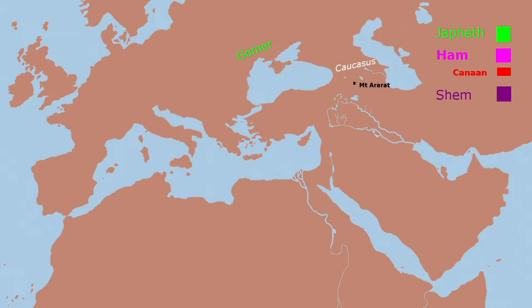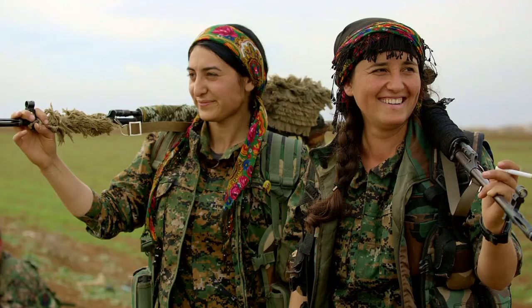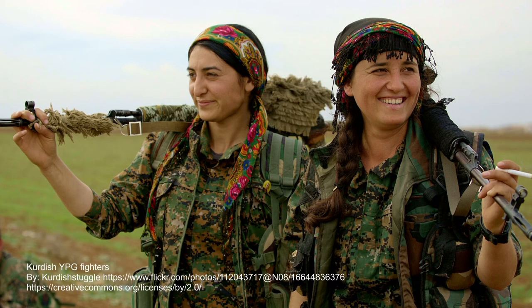Gomer is identified by Josephus, the 1st century Jewish historian, as the forefather of the Galatians of the Anatolian Peninsula. The Galatians were actually called Gomerites, but were named Galatian by the conquering Greeks. Galatia was pre-settled by the Celts or Gauls of Europe, who may still be related to the ancient Cimmerians. Madai is said to be the forefather of the Medes by Josephus and several other sources. The Medes were a key player in the battles over Mesopotamia of later times.